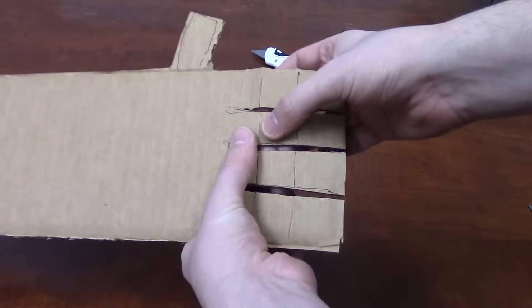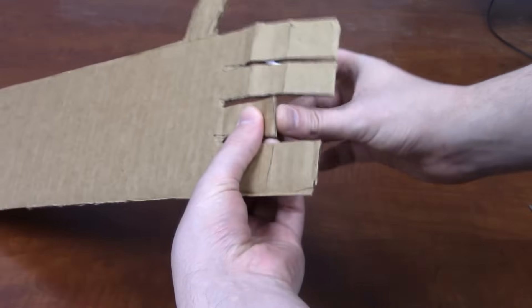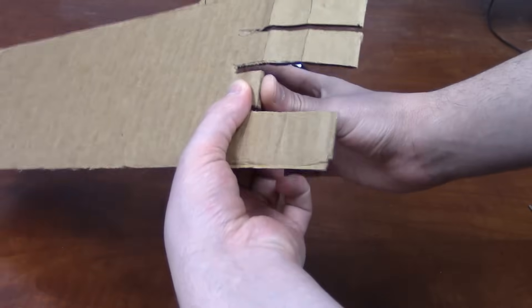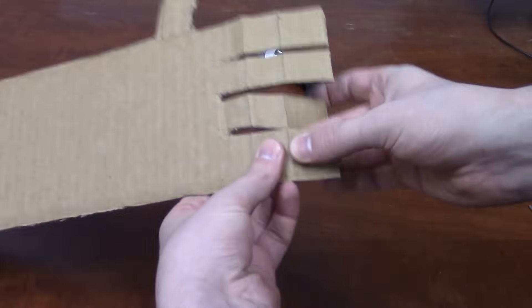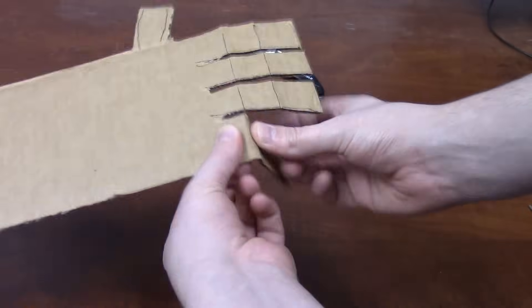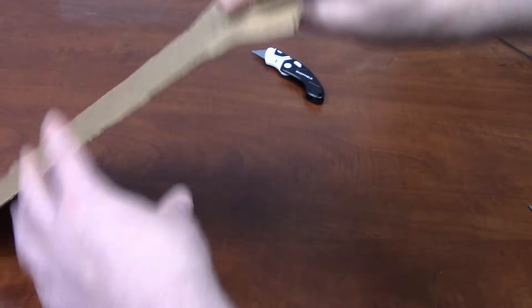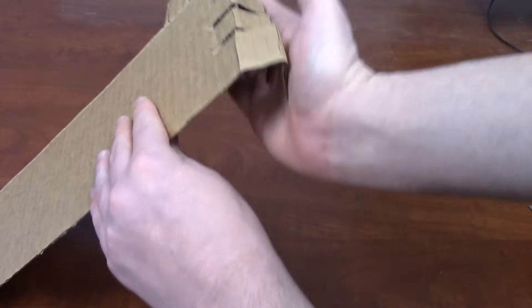And now we're just going to bend each point that we made a cut. These slits are to assist when it closes, so it actually makes a hand shape.